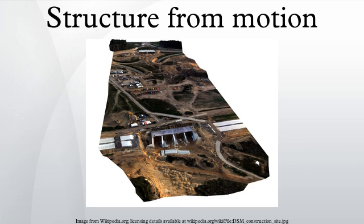To find correspondence between images, features such as corner points are tracked from one image to the next. One of the most widely used feature detectors is SIFT. It uses the maxima from a difference of Gaussians pyramid as features. The first step in SIFT is finding a dominant gradient direction. To make it rotation-invariant, the descriptor is rotated to fit this orientation.